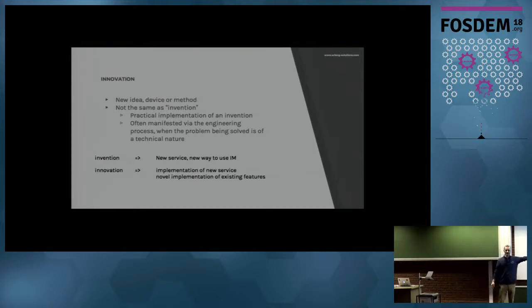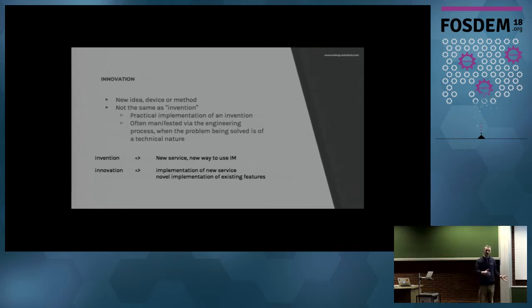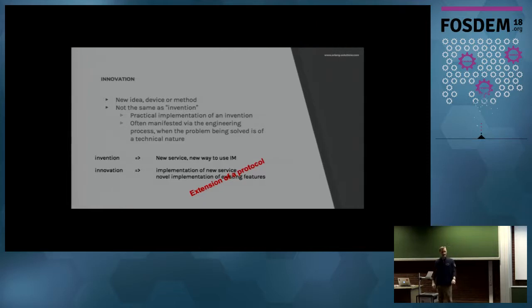In our case, invention will be something new that you want to do using instant messaging — some new service, some new way to use it. Innovation would be an implementation of those. Alternatively, innovation can be a new way to do something that already existed — some old idea done in an innovative way. In our case, it's going to be an extension of a protocol. That's what we are going to talk about: how can we innovate using this protocol?